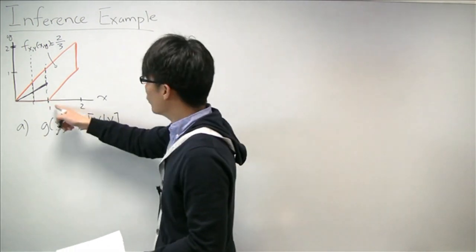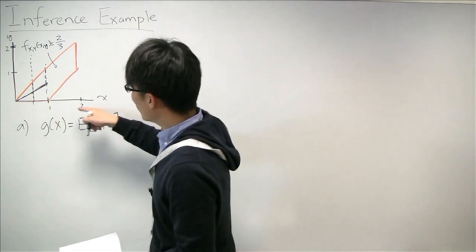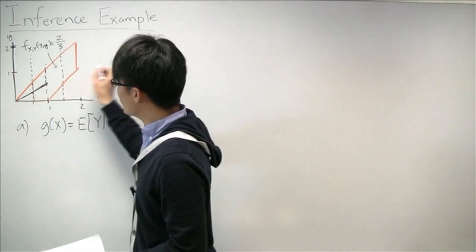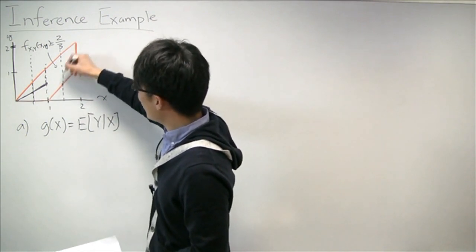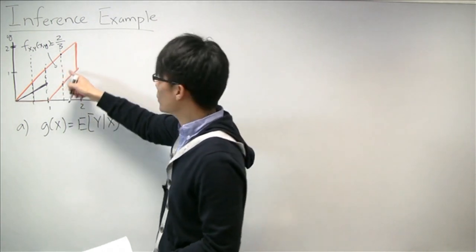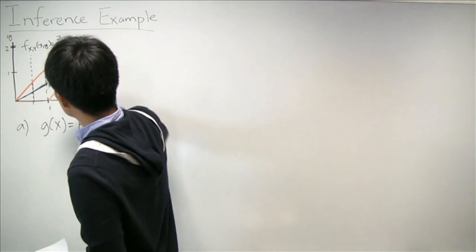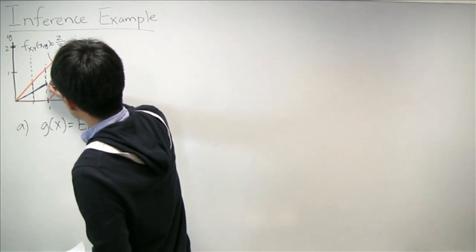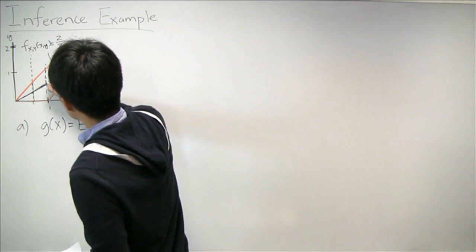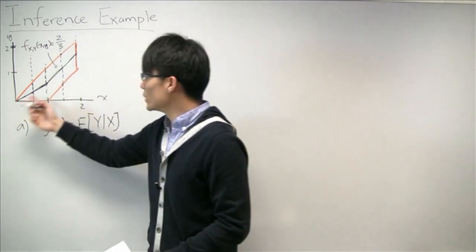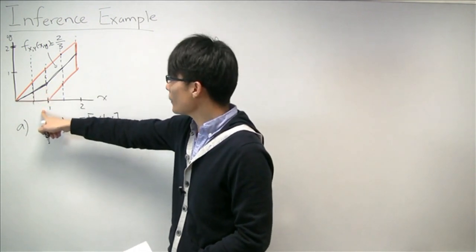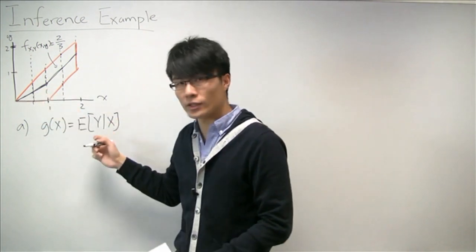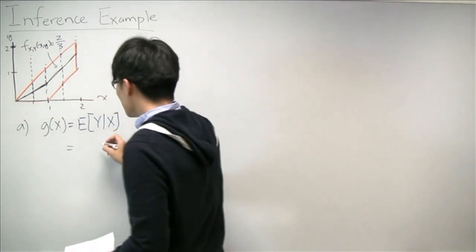Things are a little bit different when we move to the region where X is between 1 and 2. Say at X = 1.5, this line doesn't continue, because now the slice of Y goes from here to here. And again, it's still uniform. So the conditional expectation will be the midpoint there. Similarly, for X equals 2, it would be here. So for X between 1 and 2, the conditional expectation actually looks like a second linear piece, and there's a kink at X equals 1.